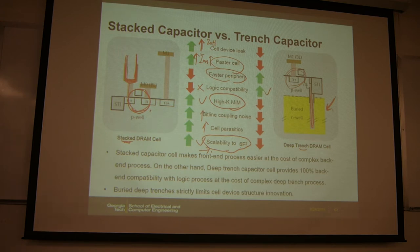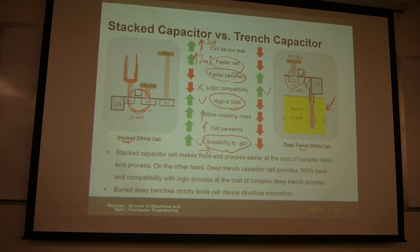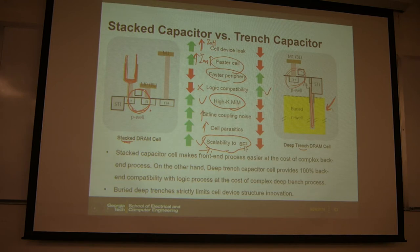Regarding why high-K dielectrics can't easily be used for the trench capacitor: it is very hard to fill that trench because it is very deep. You can use ALD, but back in 2005–2006, ALD was not that mature, and by then the industry had already switched to stacked capacitors. The key factor remains scalability, specifically the layout differences between the two approaches.